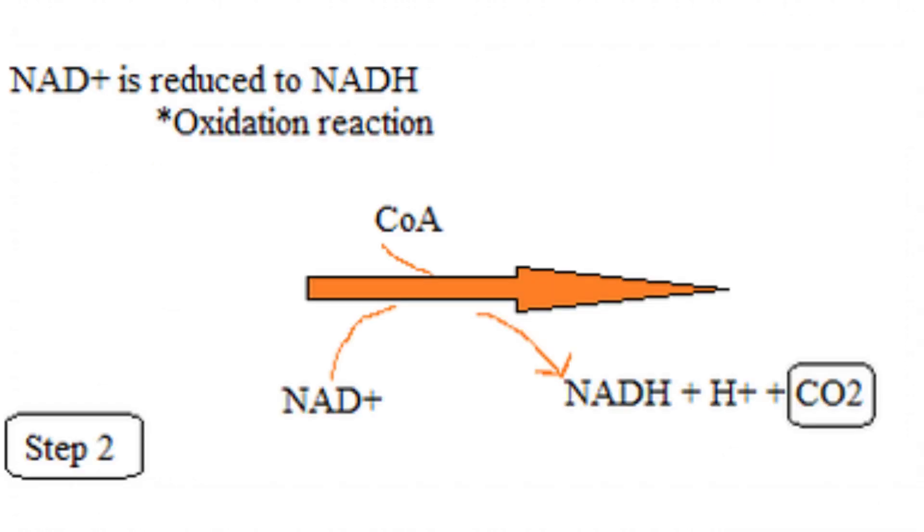The remaining two-carbon molecule is then oxidized, causing NAD plus to become NADH. Remember that if a molecule is oxidized, it means losing electrons. So these lost electrons are gained by NAD plus, which is why it turns into the NADH molecule and no longer has a positive charge.